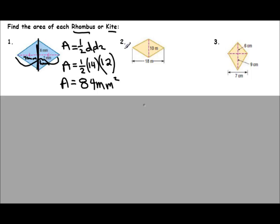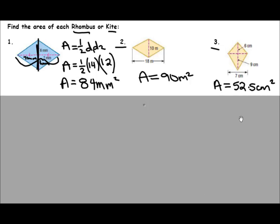Pause the video and try number 2 on your own, see if you get what I get. The area is 90 meters squared. For number 3, pause the video and see if you get what I get. Keep in mind this time that each part of the diagonal has a different length — 6 centimeters and the other part is 9 centimeters. We should have gotten 52.5 centimeters squared. If either one caused you problems, raise your hand or ask a neighbor.